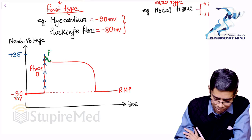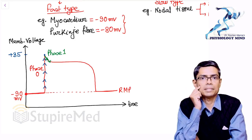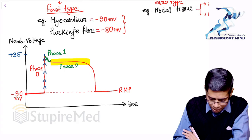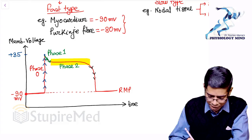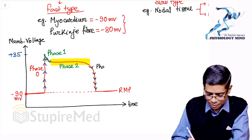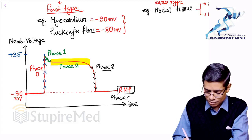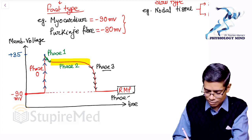After Phase 0, the membrane voltage starts going back towards the RMP — this is Phase 1. Then there is a part where the membrane voltage is almost stable — this is Phase 2. Then the membrane voltage moves completely back towards RMP — this is Phase 3. After Phase 3, the membrane is at RMP, which is called Phase 4.